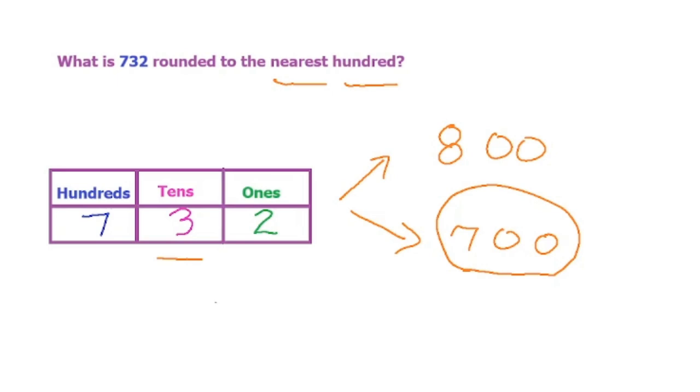What that really means is if you think about it for a second, on a number line 732 is closer to 700 than 800. If we draw a quick number line here, here's 700, here's 800.